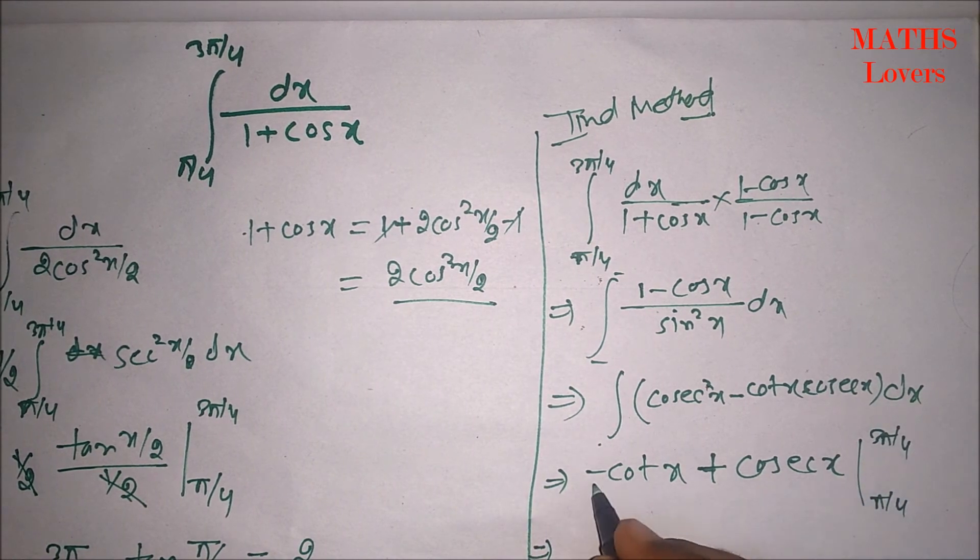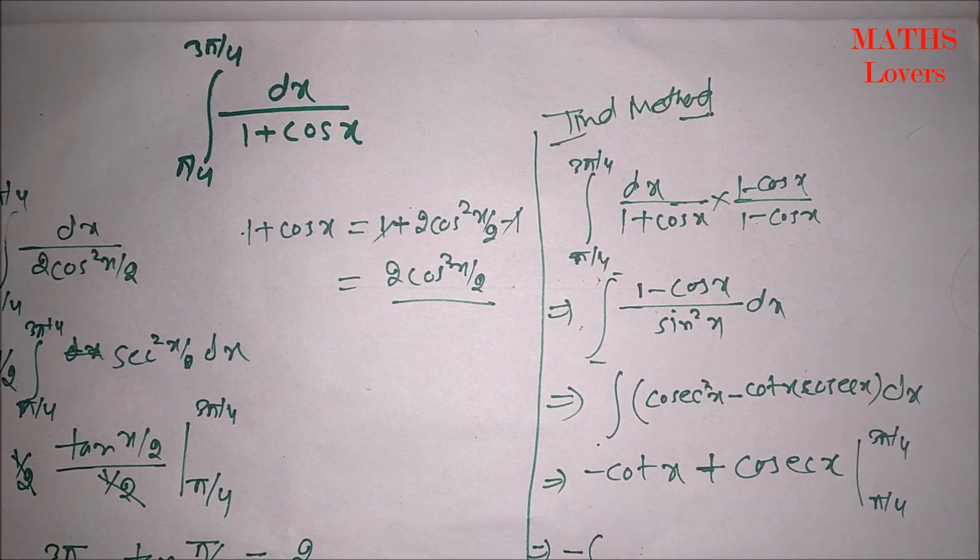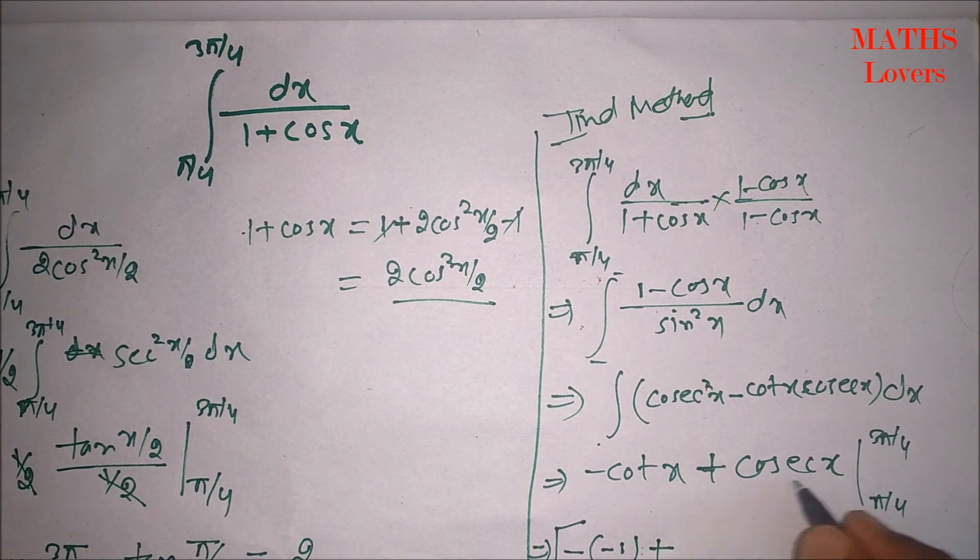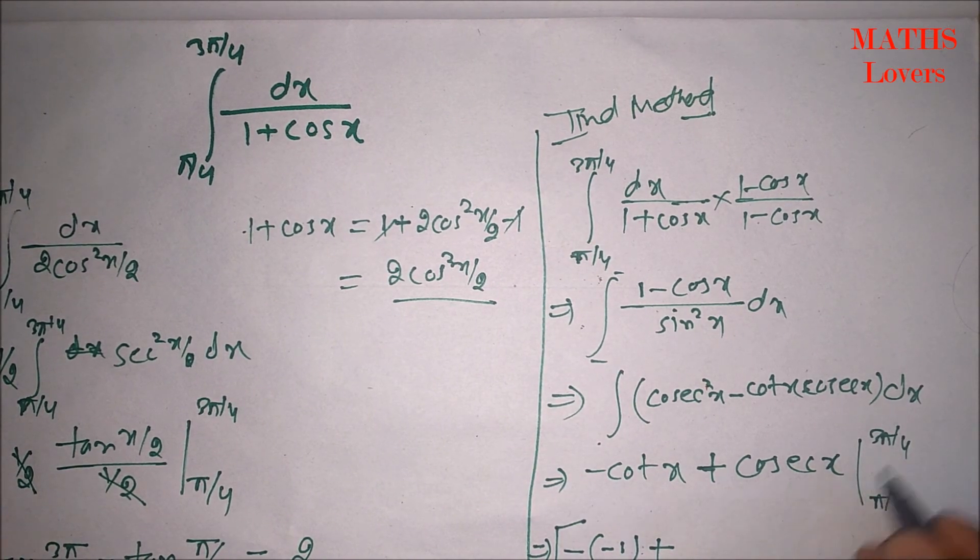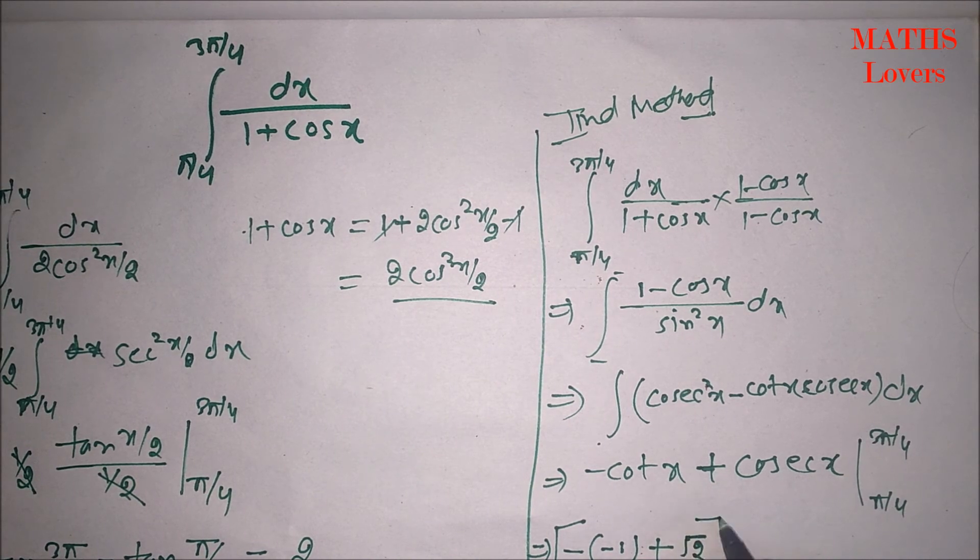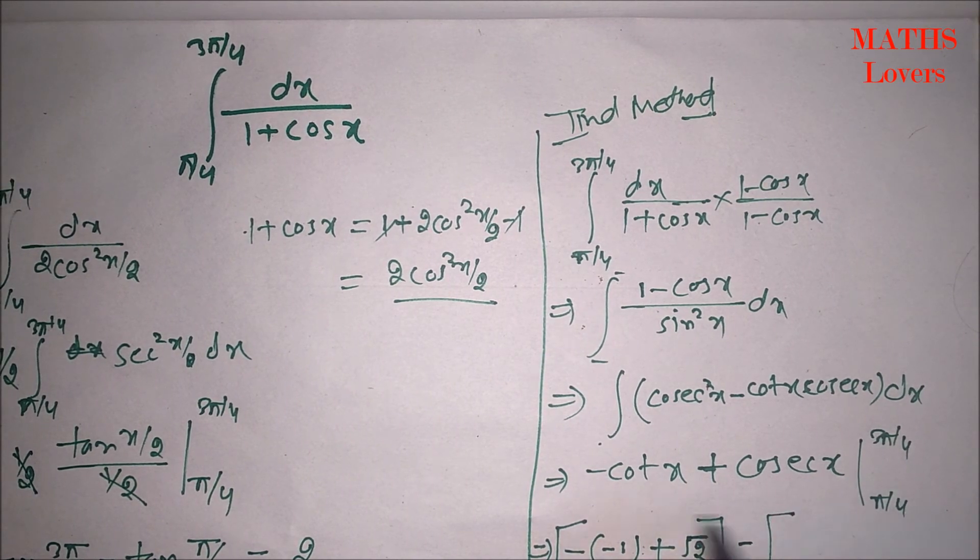So, if we put 3 pi by 4. So, cot 3 pi by 4 will be in second quadrant. That means it will be negative. So, we will write minus minus 1 plus cosec 3 pi by 4. That will be root 2. Second quadrant sin and cosec is positive. Minus. Now, we will put pi by 4.